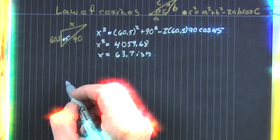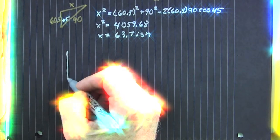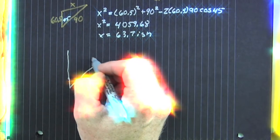So, it's 63.7-ish feet from pitcher to first, but what about pitcher to second?